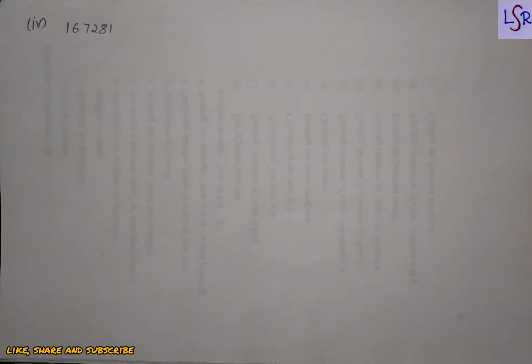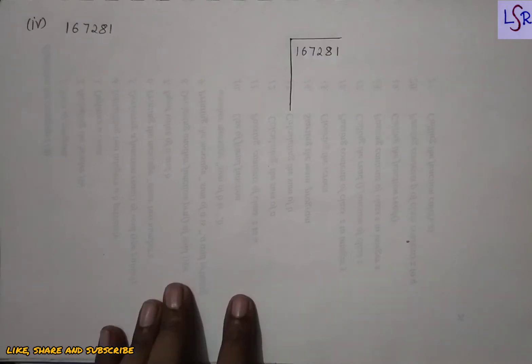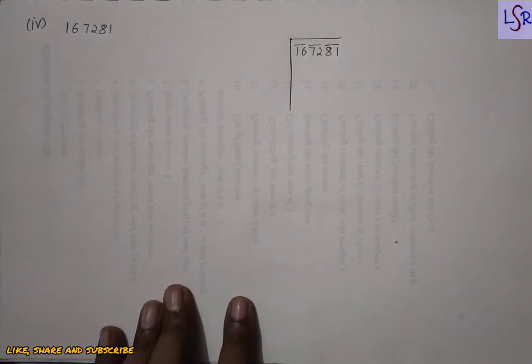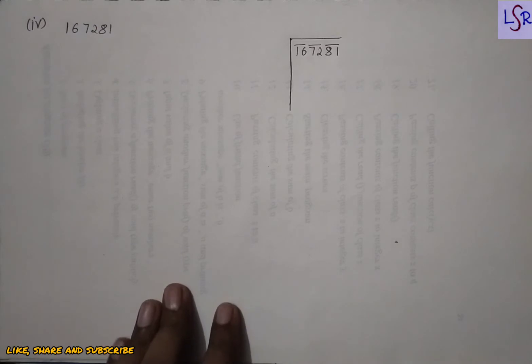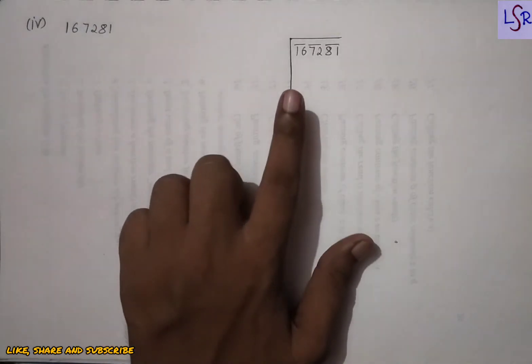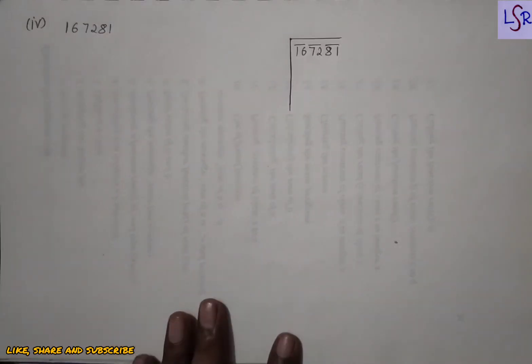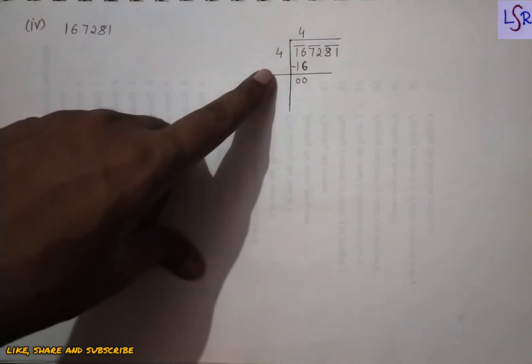Now we do one more part: the number 167281. We make pairs from the back and again get 3 pairs, meaning the answer will be 3 digits. We start from the first group: we have 16, which is the square of 4. So we take 4, subtract to get 0, add 4 here, and copy down 72.